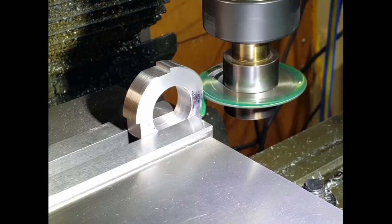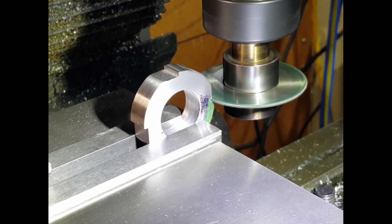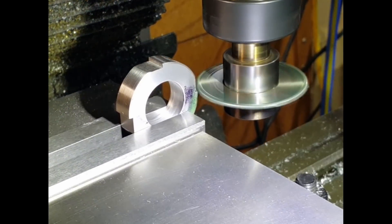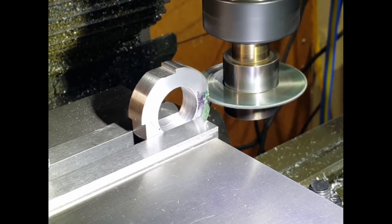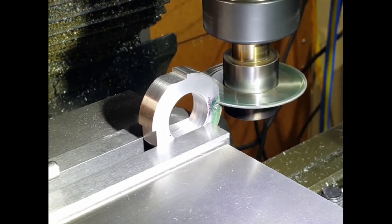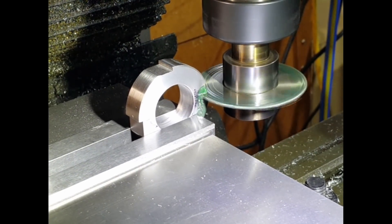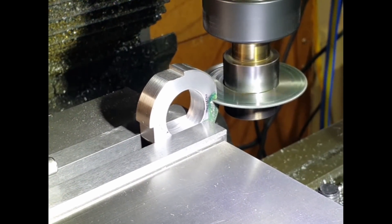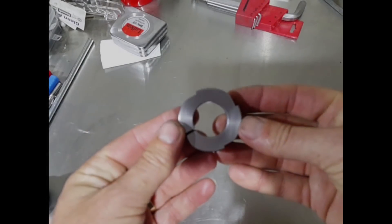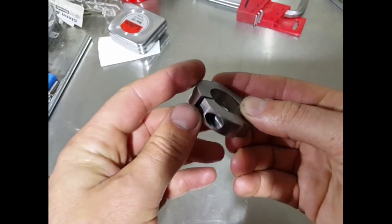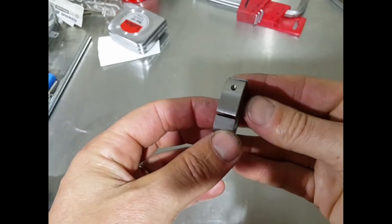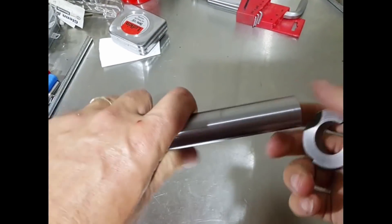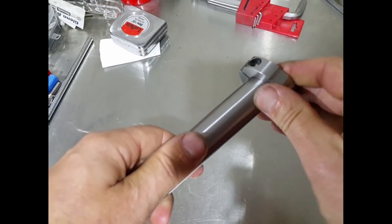After machining all four cuts, you have to slice or put a slit straight through here. So this allows us to clamp the part onto the shaft itself. And here's the finished part. And it's a nice tight fit.